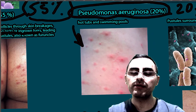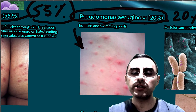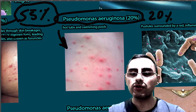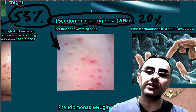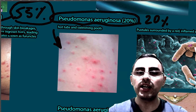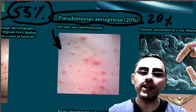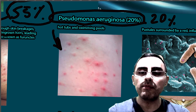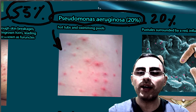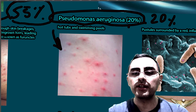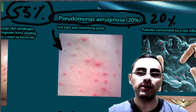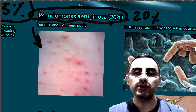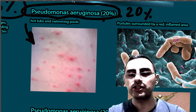Pseudomonas aeruginosa infection is also cluster-like, usually on the back and chest. It occurs after swimming or bathing in a hot tub, appearing after several hours or several days. Usually it is a self-resolving condition.